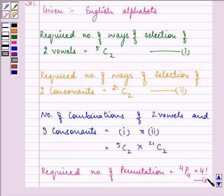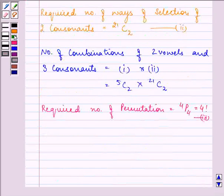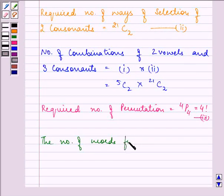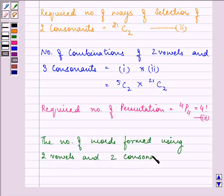Again applying the multiplication principle, the number of words formed using 2 vowels and 2 consonants equals equation 1 multiplied by equation 2 multiplied by equation 3.